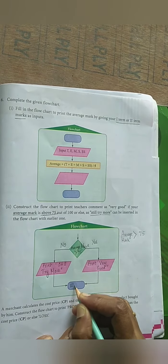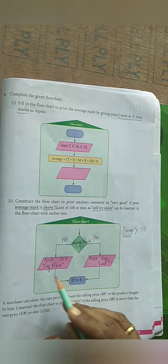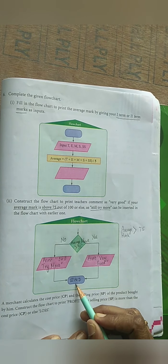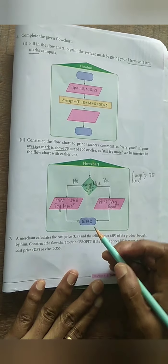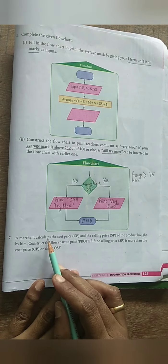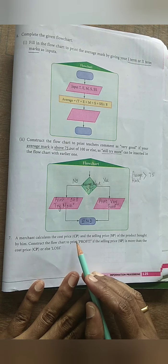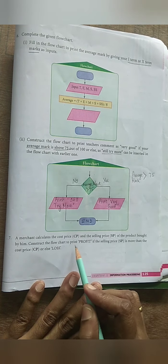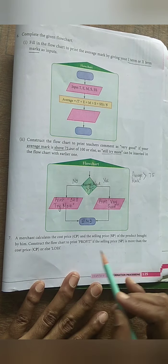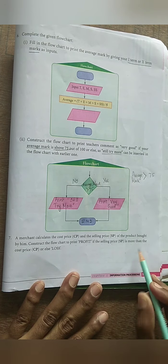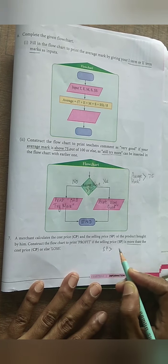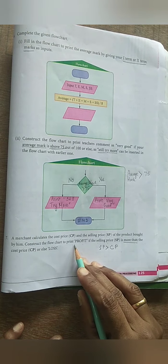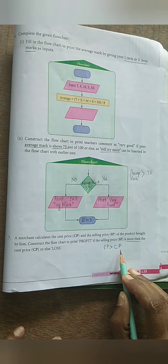After this the process comes to an end. The print statement represents an output statement, and the decision box and end complete your task. Now coming to the last problem - the seventh: a merchant calculates the cost price CP and the selling price SP of the product. We construct the flowchart to print 'profit' if the selling price SP is more than the cost price CP. If the condition is false, we print 'loss.'